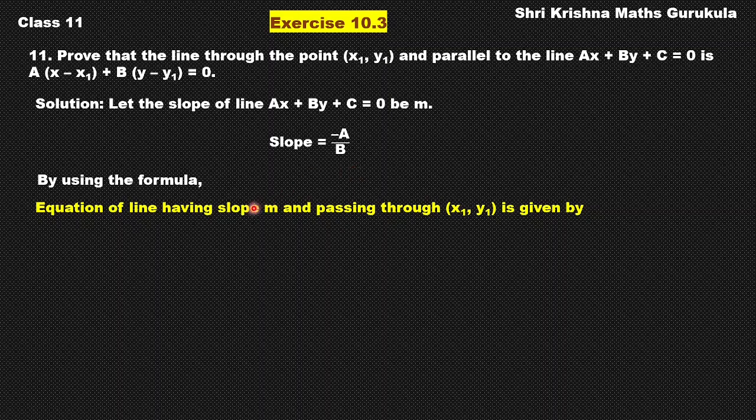Now we will use the formula. It is understood that this slope m, which is minus A by B, is same as the slope of the other parallel line. So we are taking the slope to be m. Then when we know a point on the line and its slope, then equation of the line is y minus y1 is equal to m into x minus x1.